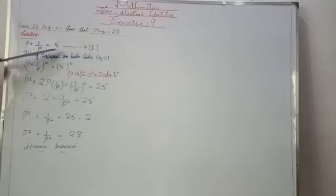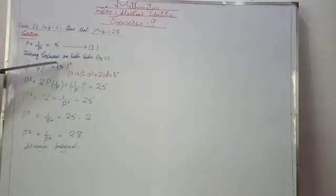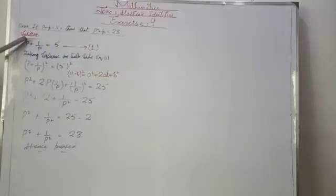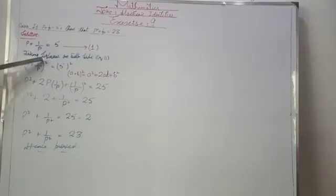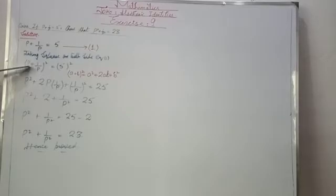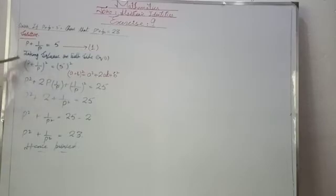We have p + 1/p = 5 — this is Equation 1. Taking square on both sides of Equation 1, on the left-hand side we have (p + 1/p)². Now suppose a = p and b = 1/p, so we apply the a + b square formula.